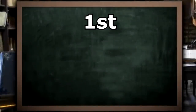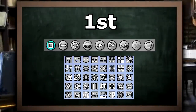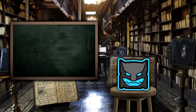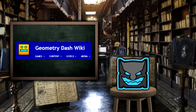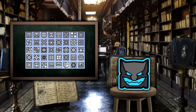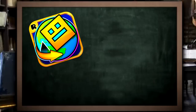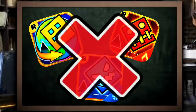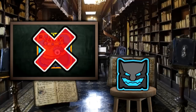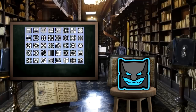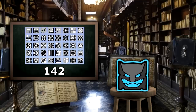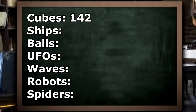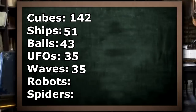First, we will need the total number of choices in each category. For this, I will be mostly relying on the Geometry Dash wiki, except for the cubes, where we will be excluding the spin-off games like GD World, Meltdown, and Sub-Zero, because those suck. So we won't be counting any cubes from those games. That would result in 142 total cubes. Next is ships at 51, balls at 43, UFOs and waves at 35, robots at 26.